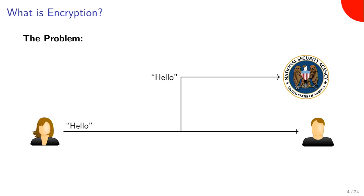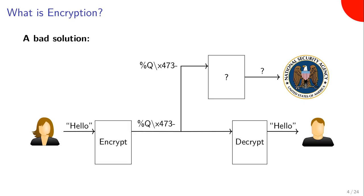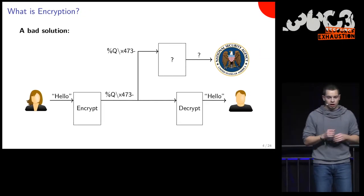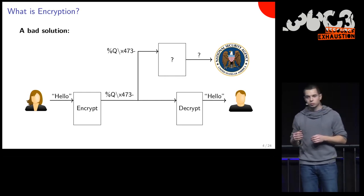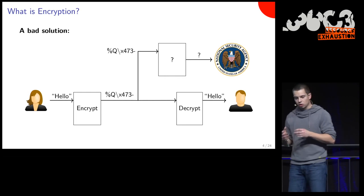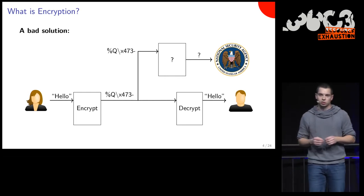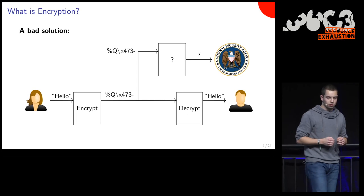What some people think how cryptography works is something like the following, which is kind of close to the real thing but not really: Alice applies some kind of encryption procedure to her plaintext message to produce some random, unintelligible gibberish which we call the ciphertext. Alice sends the ciphertext to Bob, and Bob has the decryption procedure — he knows how to decrypt, so to invert the encryption procedure and recover the plaintext message.